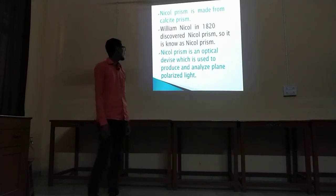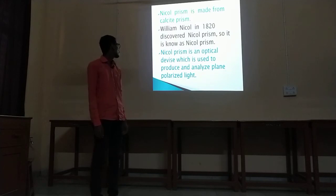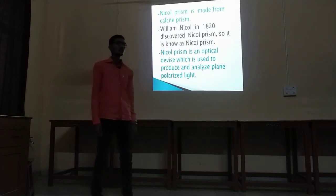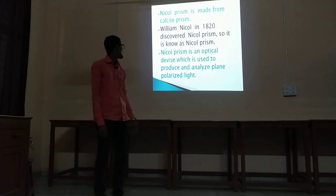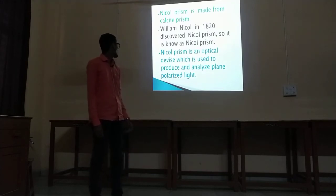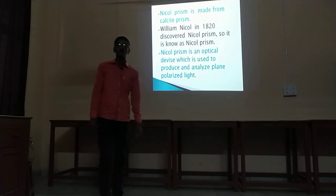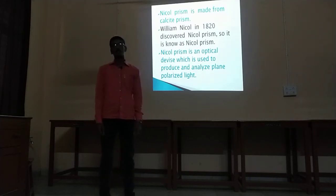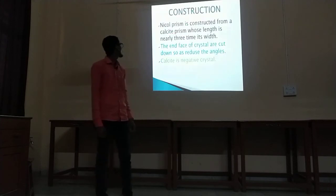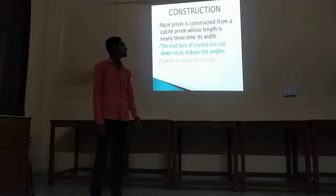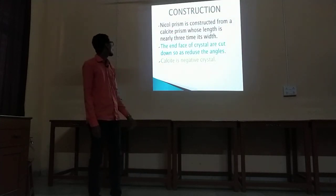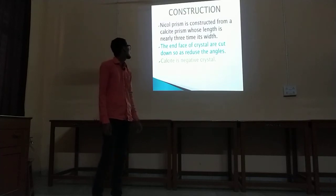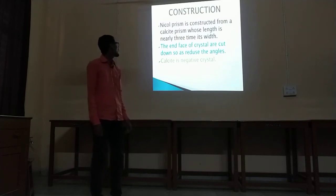Nicol Prism is an optical device which is used to produce and analyze plane polarized light. Nicol Prism is made from a Calcite Prism. What is the construction of Nicol Prism? The Nicol Prism is constructed from a Calcite Prism whose length is nearly 3 times its width.